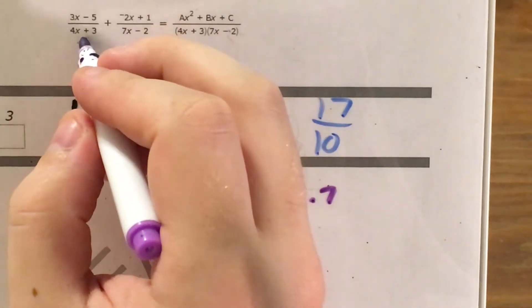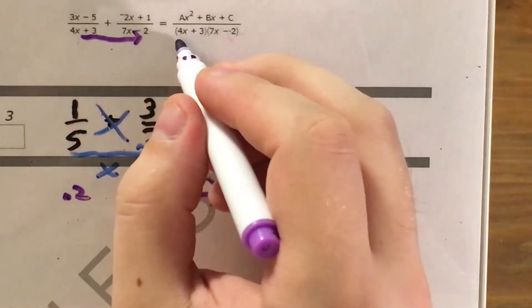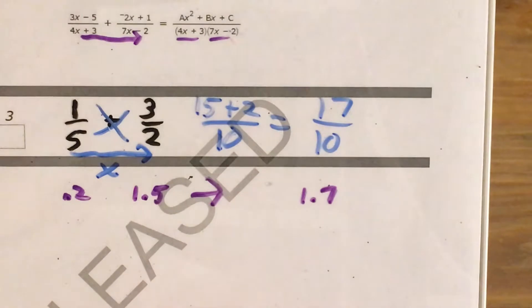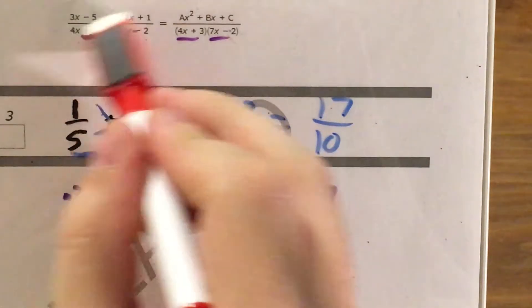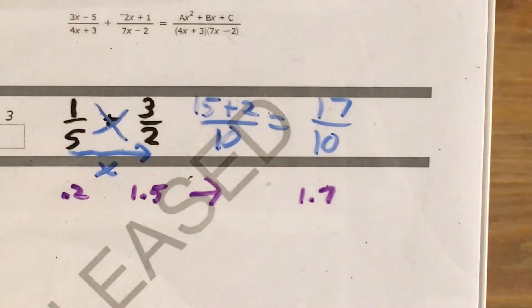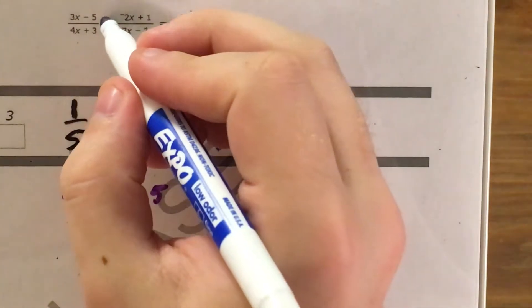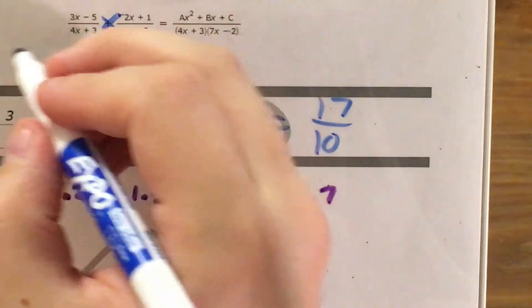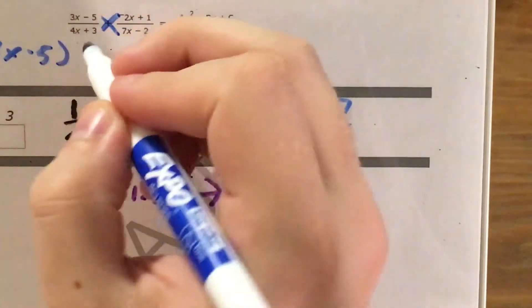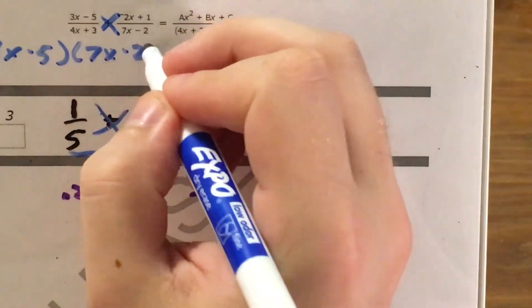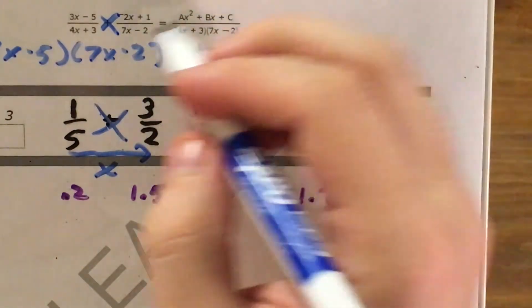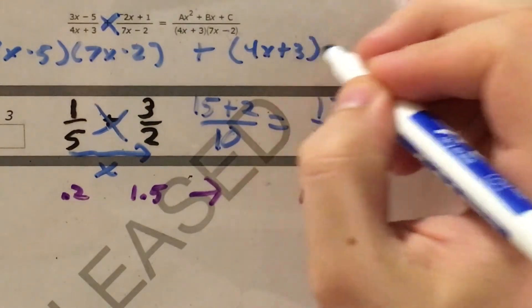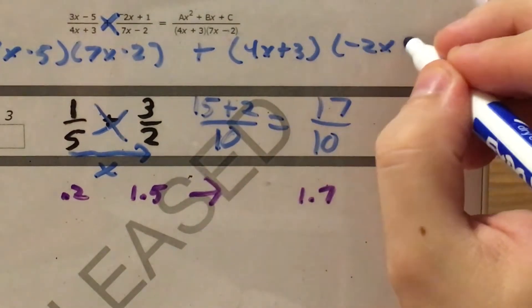So, they've already done part of the work for us. They have multiplied across the denominators to get 4x plus 3 times 7x minus 2. Now, of course, they didn't actually foil that out. They left us to do that. But anyway, we're not going to gripe or be super bitter about that for the rest of our lives, are we, Mr. W? But in order to get my numerator, I'm going to cross-multiply and add. So this is going to end up being 3x minus 5 times 7x minus 2, and that's going to be added to 4x plus 3 times negative 2x plus 1.